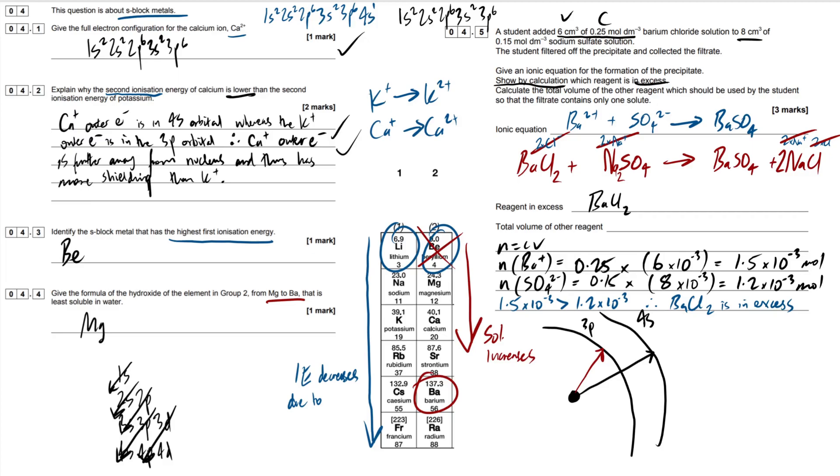Now calculate the total volume of the other reagent which should be used by the student so that the filtrate contains only one solute. So when we're working this out, all you have to do is compare the molar ratios. If we look at this equation right here between barium and sulfate, what is our molar ratio? Simply one to one. Therefore these moles should be exactly the same for it to be a complete reaction. So none of the reagents are in excess and none of them are limiting. They're both equal. They're in a one to one ratio. So what do we have to do to get this number of moles to 1.5? And what are they asking for? Which variable? The volume. So all you would do is how do we get this to 1.5? It's just times it by 10. So hopefully you can just spot that we have to times this by 10 times 10 to minus three to get to 1.5. So that would be 10 centimeters cubed.